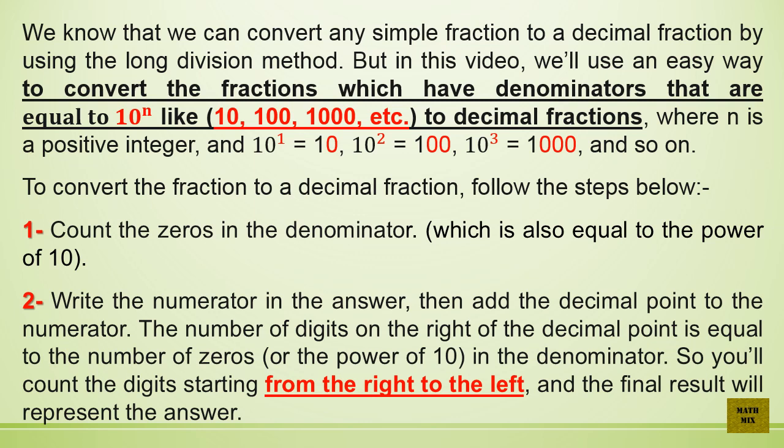To convert the fraction to a decimal fraction, follow the steps below. Step 1: Count the zeros in the denominator, which is also equal to the power of 10. Step 2: Write the numerator in the answer, then add a decimal point. The number of digits on the right of the decimal point equals the number of zeros (or the power of 10) in the denominator. Count the digits from right to left, and the final result will be the answer.